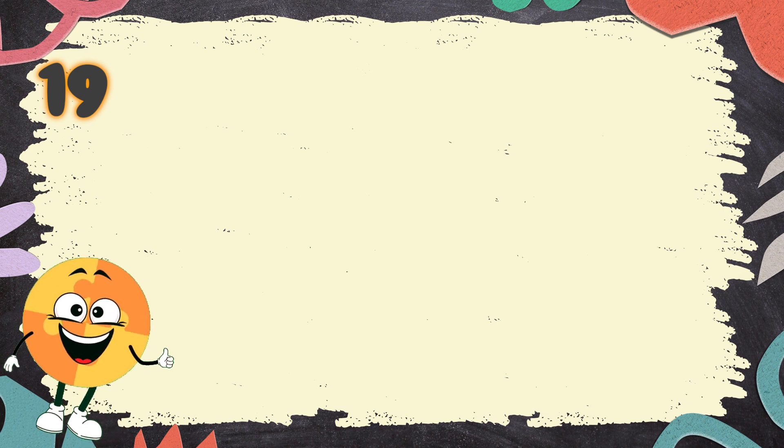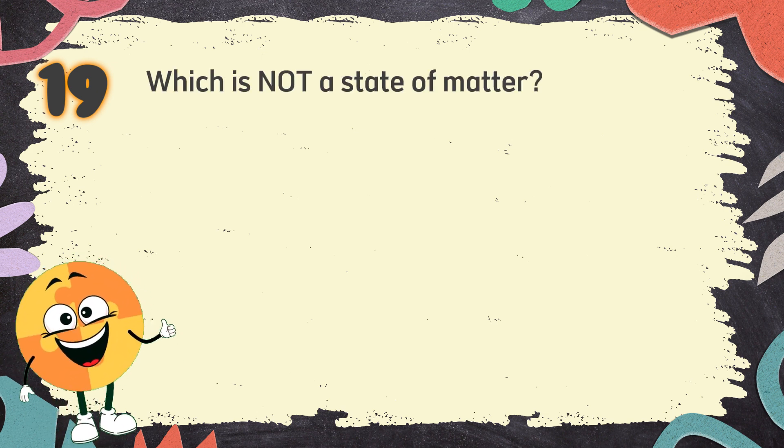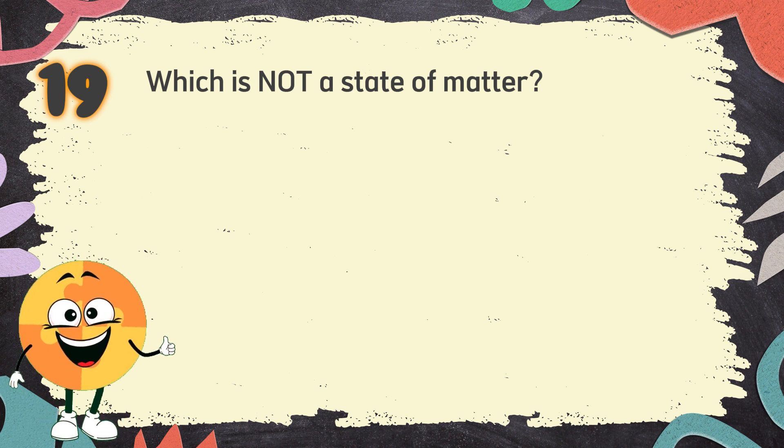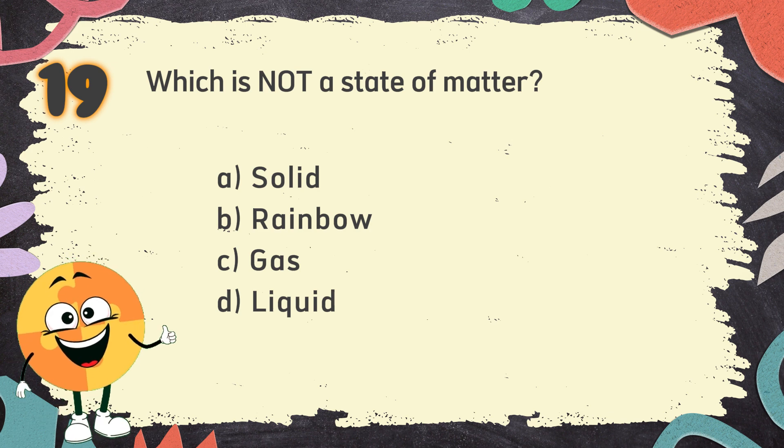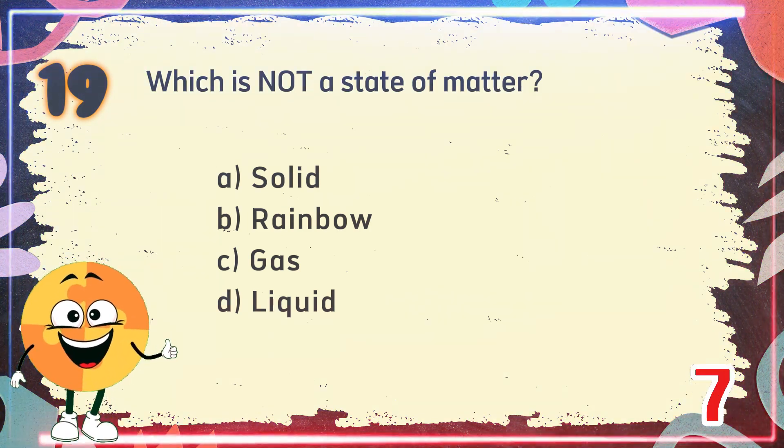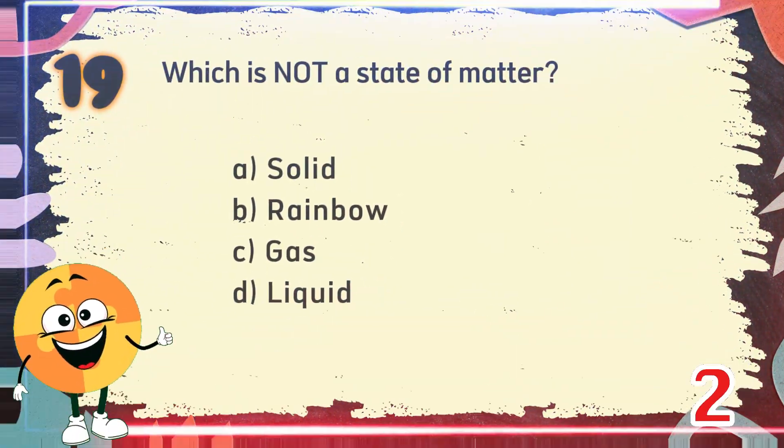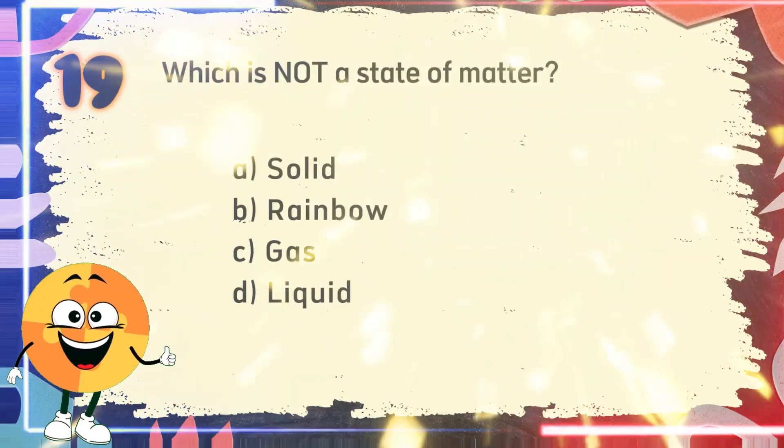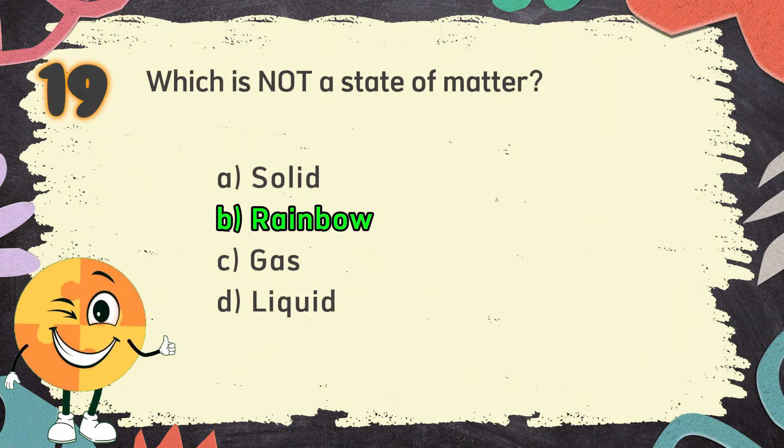Number 19. Which is not a state of matter? The choices are A. Solid, B. Rainbow, C. Gas, D. Liquid. The correct answer is B. Rainbow.